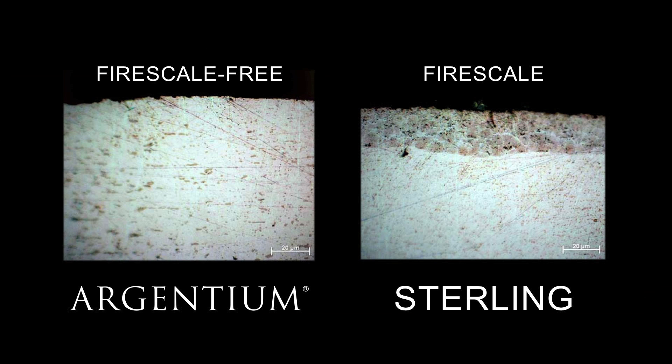When sterling silver is heated, a dark, penetrating oxide forms, called fire scale, which is difficult to remove.